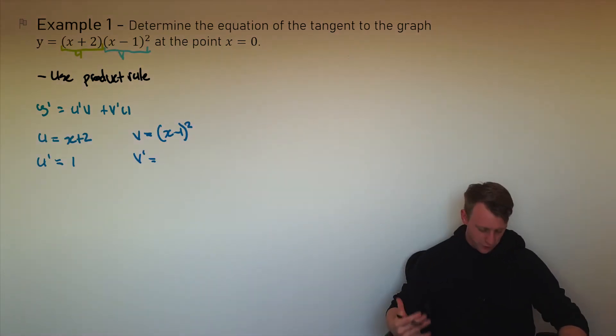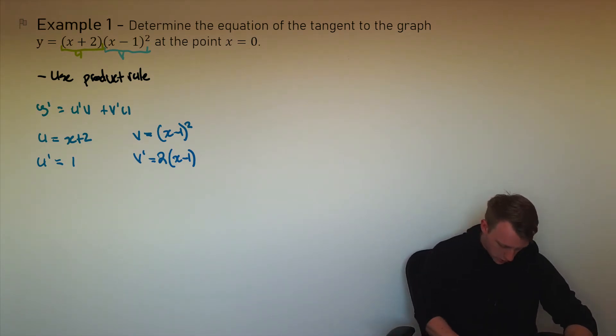Here to differentiate this function v, I'm just going to use the fast chain rule. So again, 2 comes down, the power in here stays the same to the power of 2 minus 1, which is 1, not going to write that, multiplied by the derivative of the inside, which is just 1. So I'm probably not going to write that, just because it doesn't change anything.